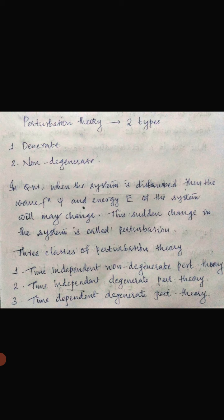The first approximation method is perturbation theory, given by Schrödinger in 1926. It is based on the assumption that the problem we wish to solve is only slightly different from a problem that can be solved exactly. Perturbation means a disturbance produced in the system. When the deviation between the two problems is small, perturbation theory is good for calculating that deviation. There are two types of perturbation theories: degenerate perturbation theory and non-degenerate perturbation theory.